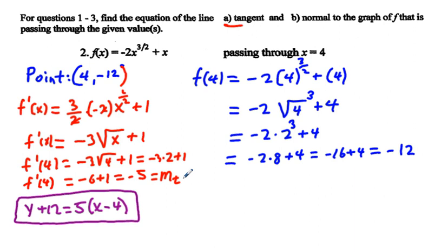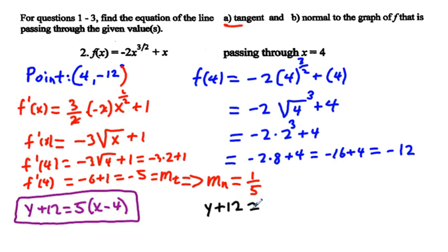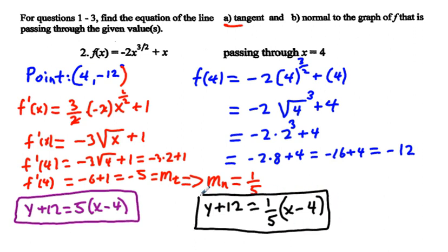For the normal line, we convert m_t to m_n, the slope of the normal line, which is the negative reciprocal of -5. So m_n = 1/5. Using the same point (4, -12), the normal line equation is y + 12 = (1/5)(x - 4). Tangent line on the left, normal line on the right.